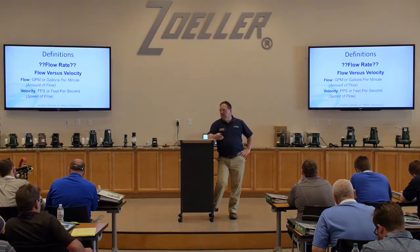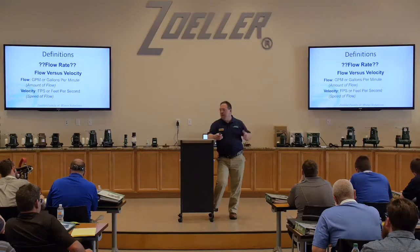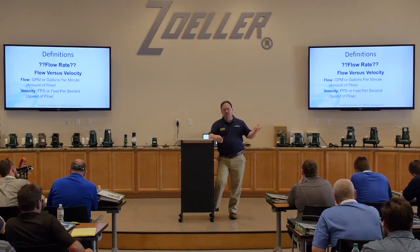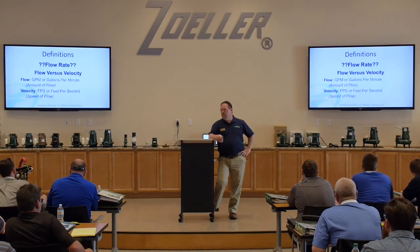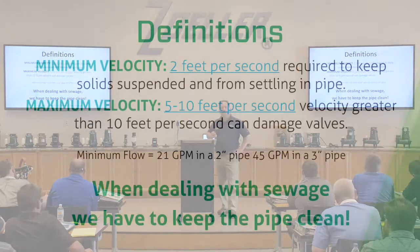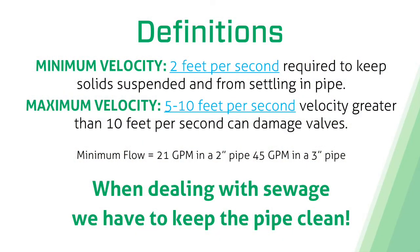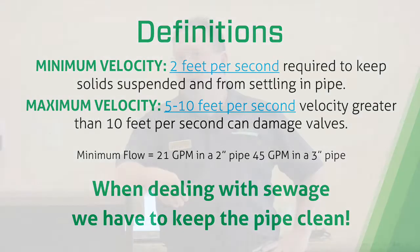We want to maintain what they call scouring velocity in that pipe. If we don't maintain scouring velocity, basically what's going to happen is solids are going to start settling out in that piping system. And if the solids start settling out, then we're going to end up with a buildup. For a sewage application, we have typically always said two feet per second is kind of the minimum scouring velocity that we want to hit to make sure the pipe stays clear.